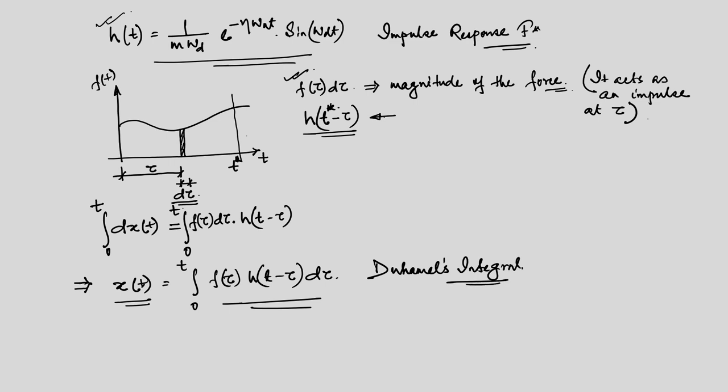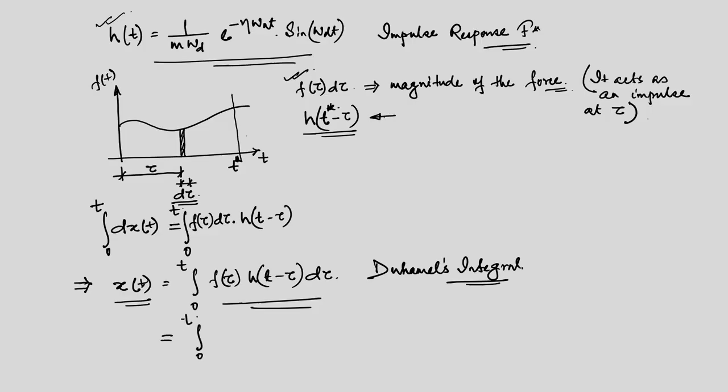This integral is called Duhamel's integral. It is a convolution integral — it convolutes the forcing function with the unit impulse response. You can also write it as ∫₀ᵗ f(t - τ)·h(τ)·dτ, which is equivalent. The main result is that x(t) due to an arbitrary forcing function is given by this convolution.